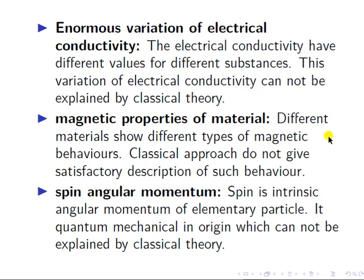Another inadequacy is the magnetic property of materials. Different materials show different types of magnetic behavior, and the classical approach does not give a satisfactory description of such behavior. Classical theory is not able to describe why a material shows a particular kind of magnetic behavior. Most magnetic properties are quantum mechanical in nature, so we need a quantum mechanical approach to describe them.